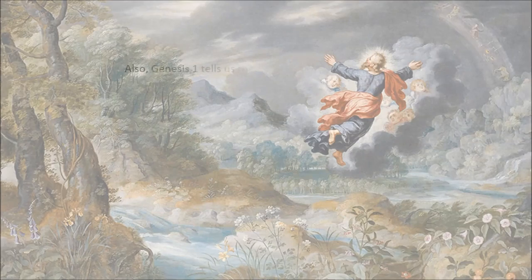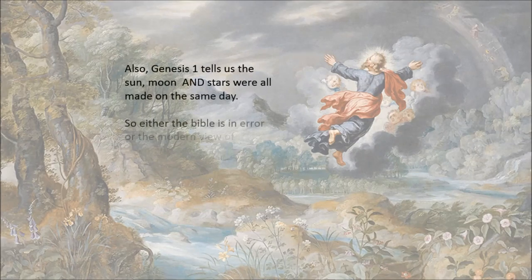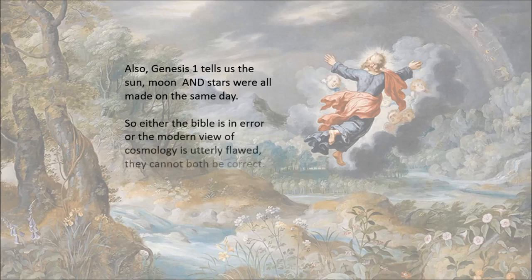Right away in Genesis 1, the sun, moon, and stars are created on the same day. And again, that's in direct contradiction with what modern scientism tells us. So are you going to take the Bible as truth, or are you going to say modern man knows better than God?